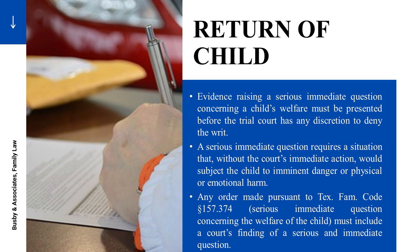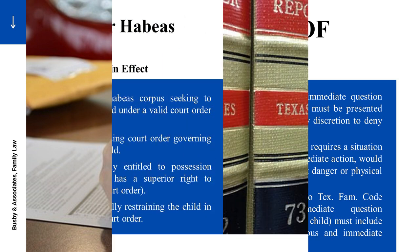A serious, immediate question requires a situation that, without the court's immediate action, would subject the child to immediate danger or physical or emotional harm. Any order made pursuant to Texas Family Code 157374 must include a court's finding of a serious and immediate question of harm or danger to the child.